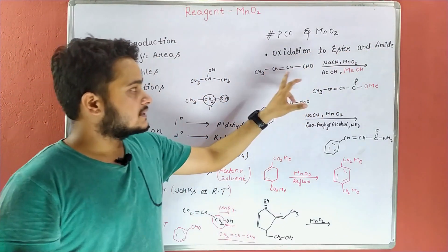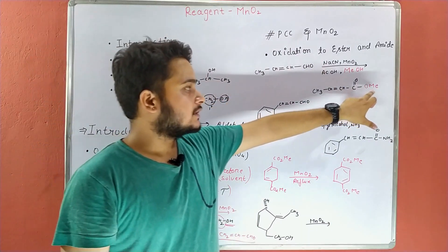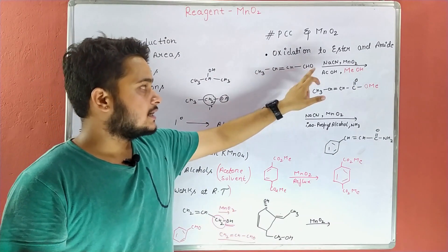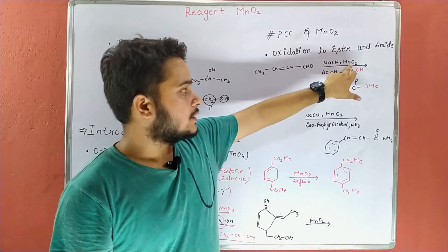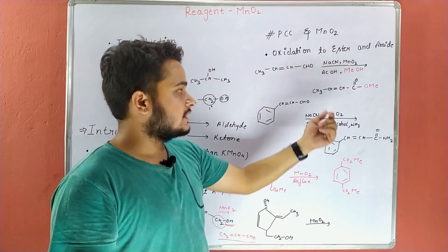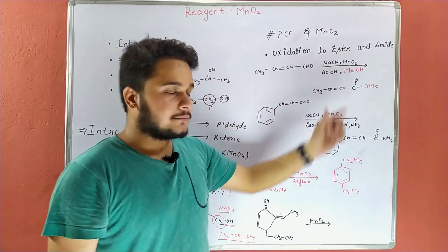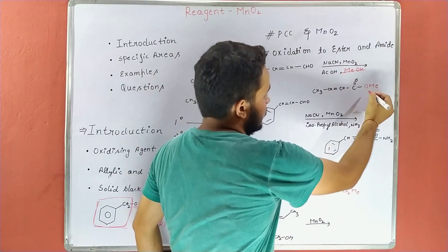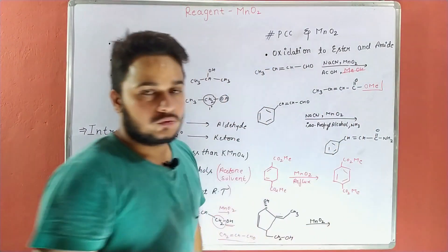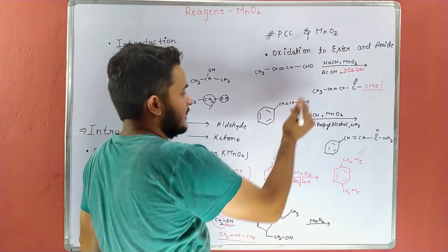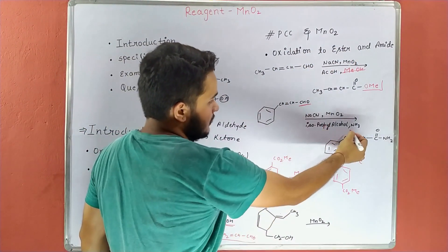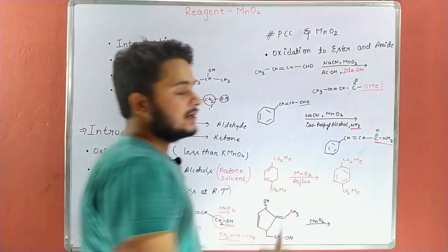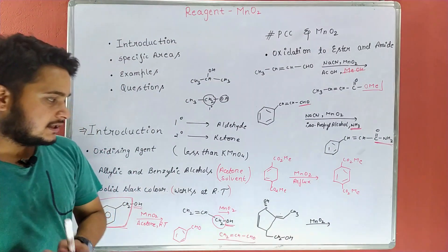MnO2 के कुछ और भी functions हैं — जैसे oxidation to ester और amide। Aldehyde को ester में convert करता है। जैसे अगर हमारे पास CHO है, तो NACN और MnO2 की presence में, ACOH के साथ react कराएंगे तो ester बनेगा। जो alcohol हम यहाँ use करेंगे, उसी का ester form होता है। यह amide में भी convert करता है — ammonia की presence में amide बन जाता है।